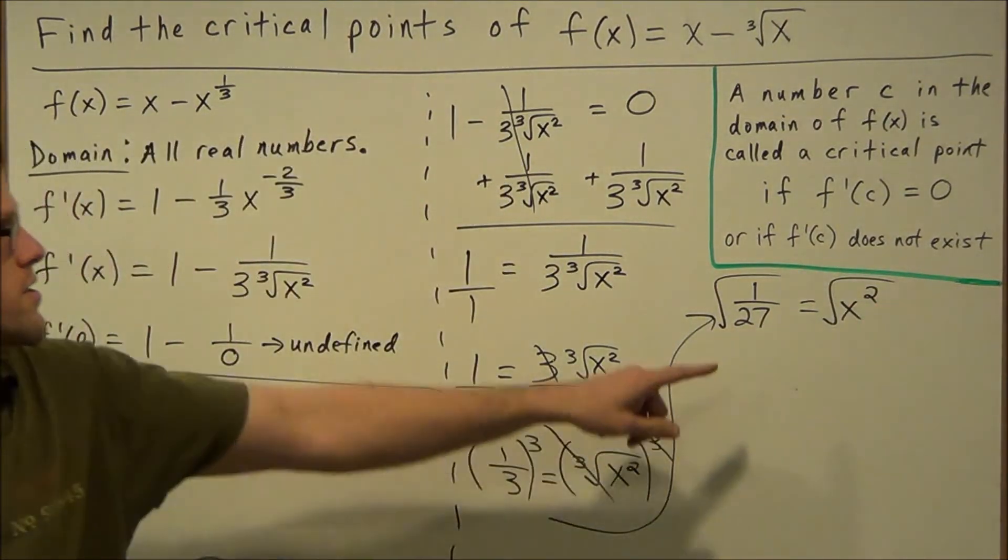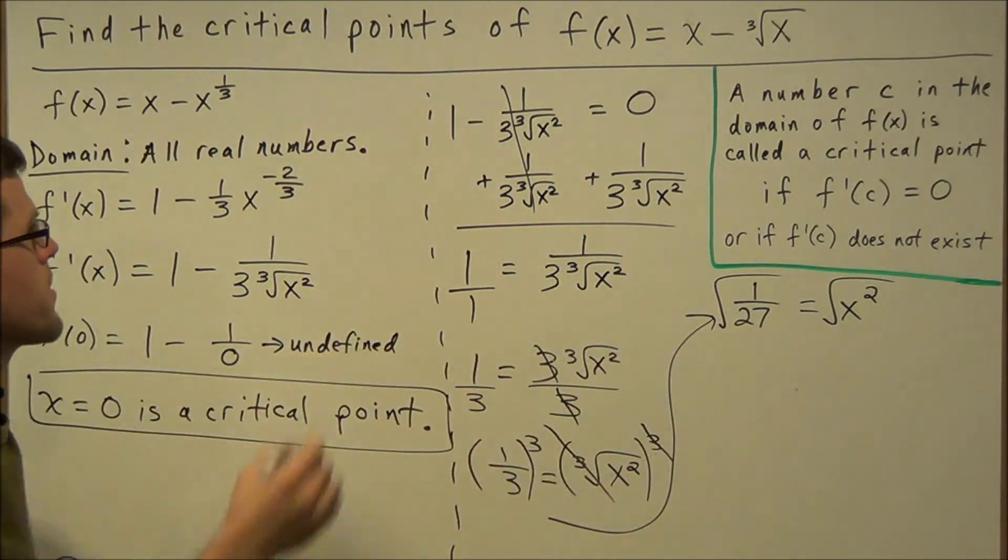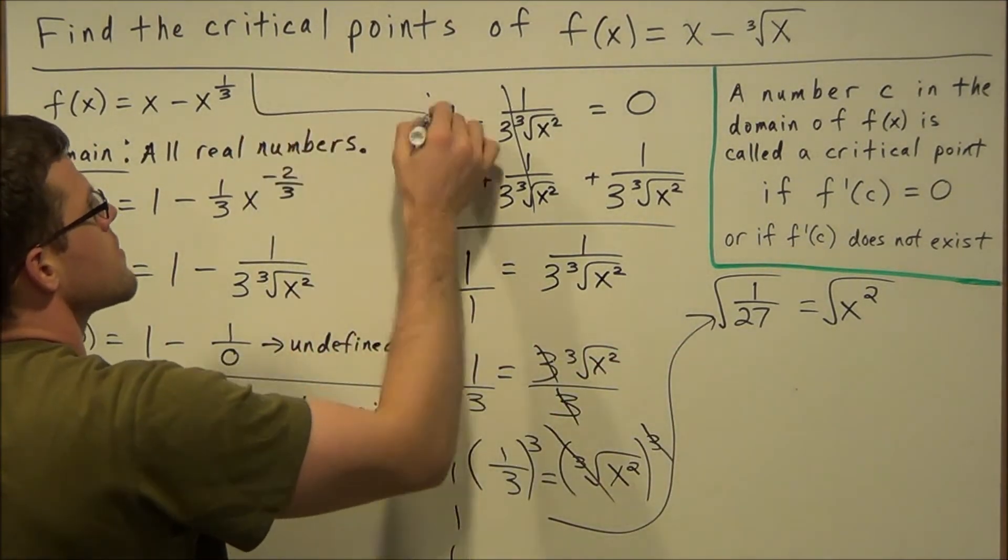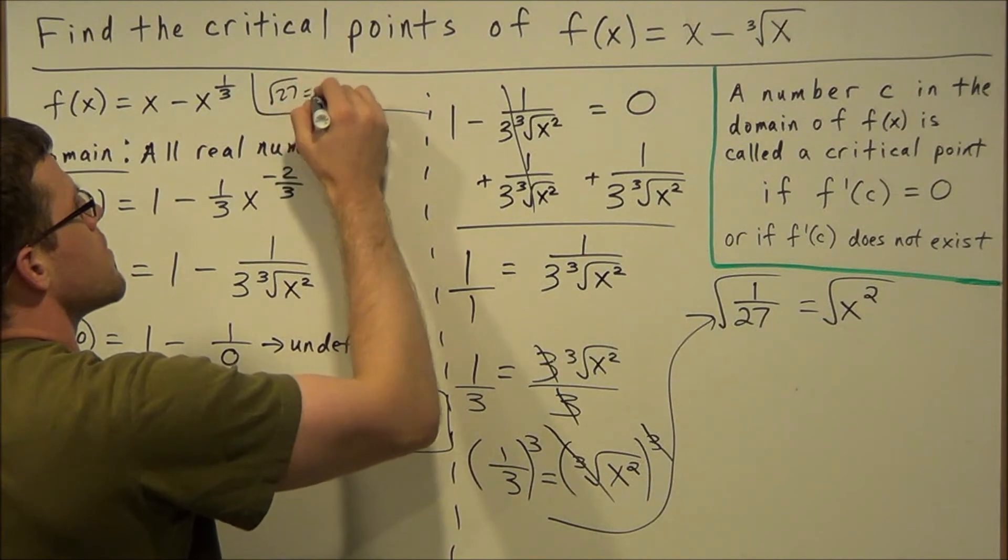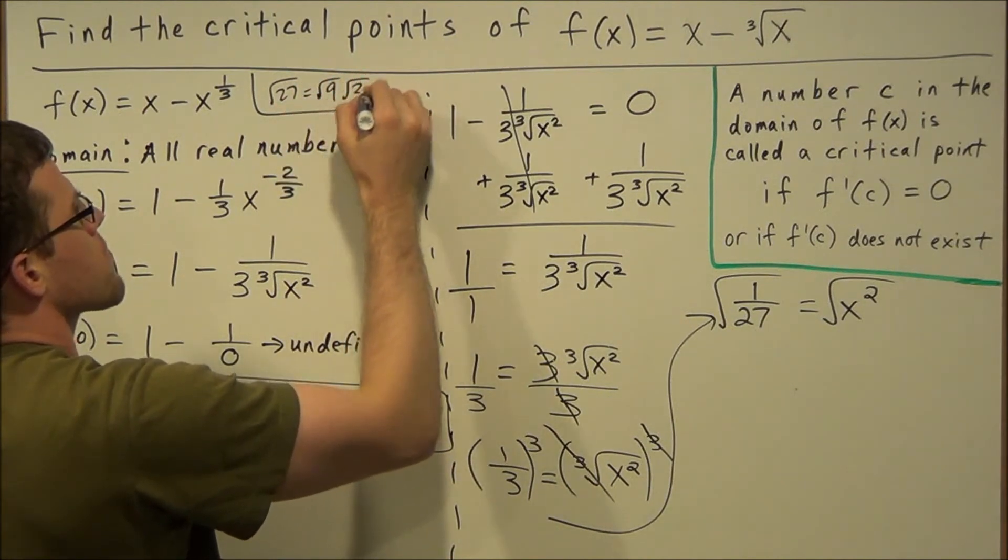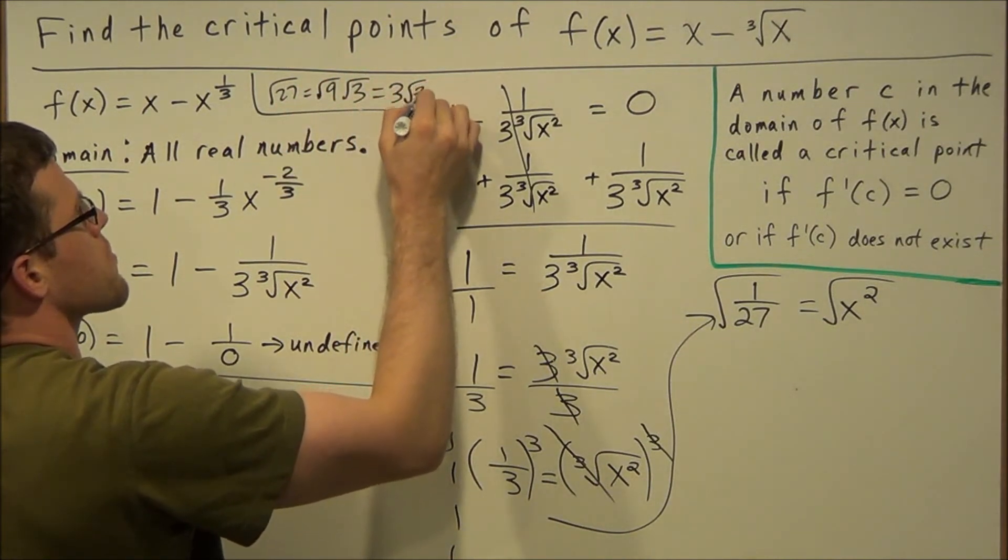We take the square root of both sides. One thing to point out here, the square root of 27 is equal to radical 9 times radical 3, which is equal to 3 radical 3.